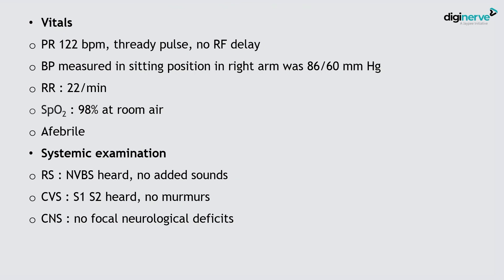Vitals: pulse rate was 122 beats per minute, thready pulse, no radio-femoral delay. Blood pressure measured in sitting position in right arm was 86/60 mmHg. Respiratory rate was 22 per minute. These findings indicate hemodynamic compromise consistent with a ruptured or leaking ectopic pregnancy.